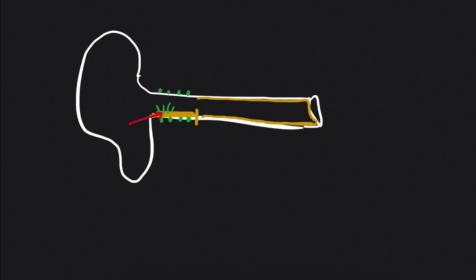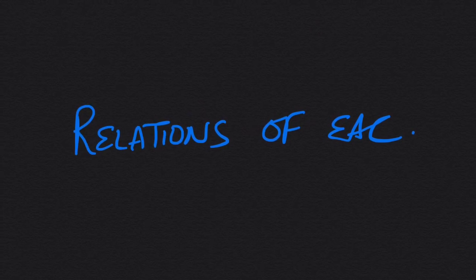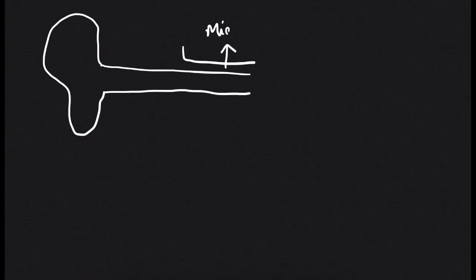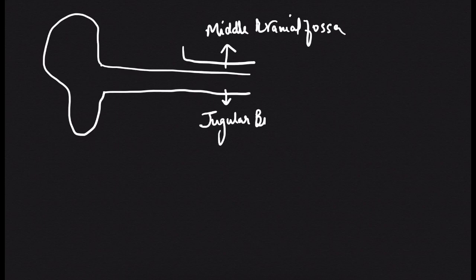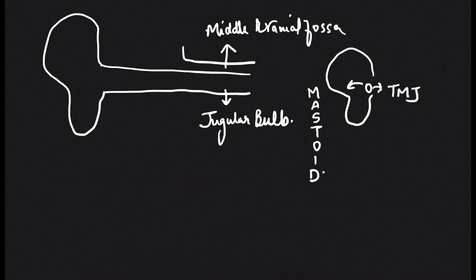Furuncles occur in the outer one-third where the skin is thick and has pilosebaceous glands. Regarding relations of the EAC: the inner bony part is related superiorly to the middle cranial fossa, inferiorly to the jugular bulb, anteriorly to the temporomandibular joint and infratemporal fossa, and posteriorly to the mastoid.